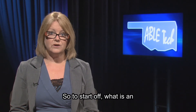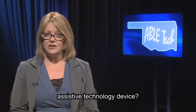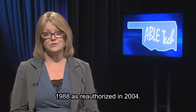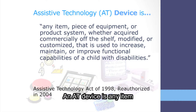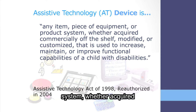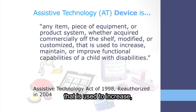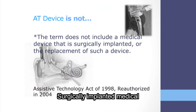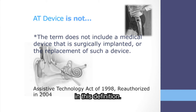So to start off with, what is an assistive technology device? The term is defined under the Assistive Technology Act of 1988, as reauthorized in 2004. An AT device is any item, piece of equipment or product system, whether acquired commercially off the shelf, modified or customized, that is used to increase, maintain or improve functional capabilities of a person with disabilities. Surgically implanted medical devices and their repair or replacement are not included in this definition.